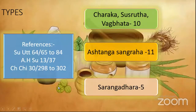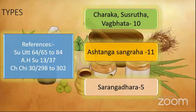The types of Aushadha Sevana Kala according to different acharyas: according to Charaka, Sushruta, and Vagbhata it is 10, and according to Ashtanga Sangraha it is 11, and according to Sharangadhara there are 5. The references can be seen in Sushruta Uttara Tantra 64th chapter, Ashtanga Hridaya Sutra 13th chapter, and also in Charaka Chikitsa 13th chapter.